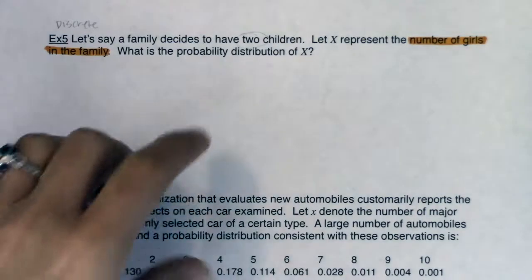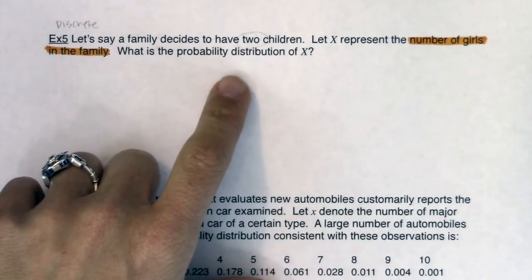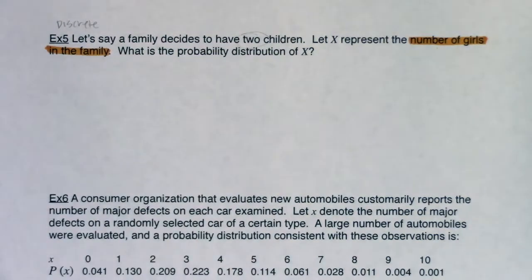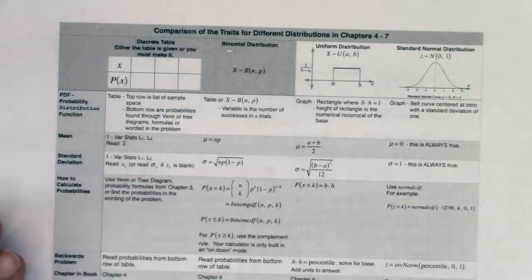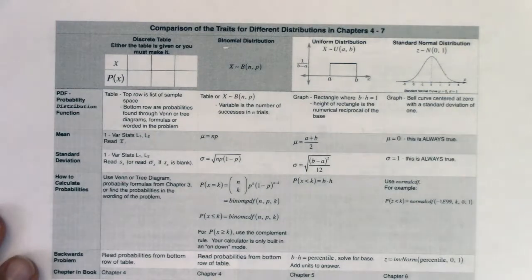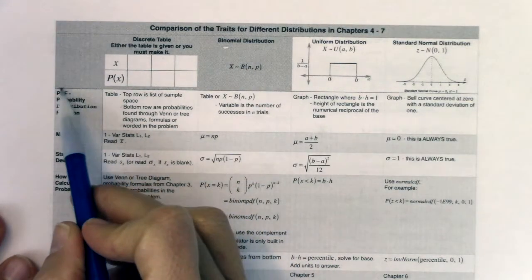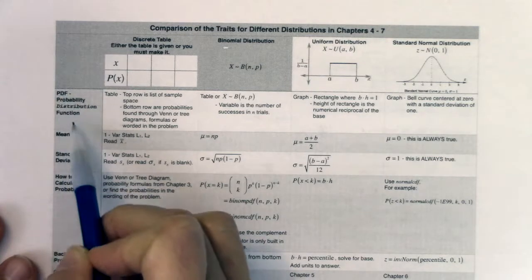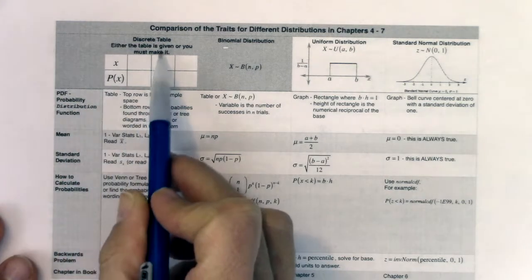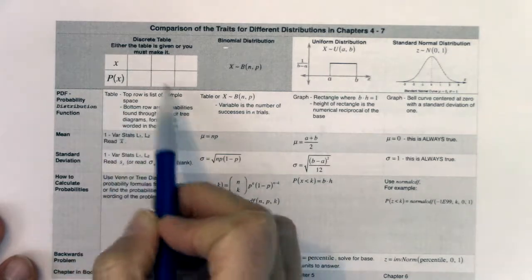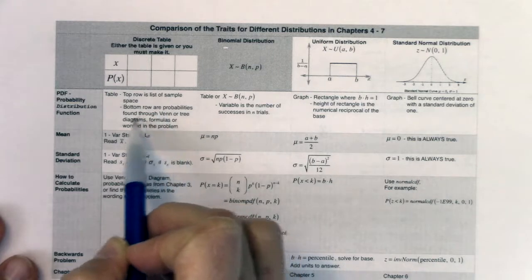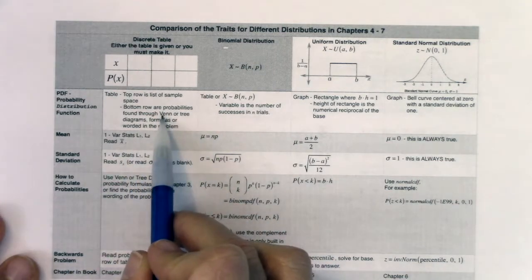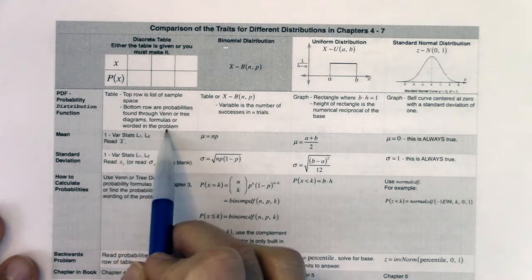I need to figure out what the sample space would be, because that's what they're asking me to find — they want a PDF. When you hear PDF, probability distribution function, it means make a table. Your table is what you want to make. The top row is your sample space, the bottom row are probabilities, found through Venns, trees, formulas, or they're worded in the problem. When you hear PDF, go back to the giant flowchart. If you realize you're in a table problem, stay in that column.